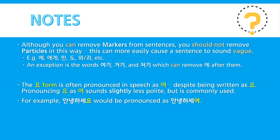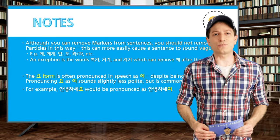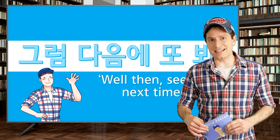Here are some notes about this lesson. Although you can remove markers from sentences, you should not remove particles such as 에, 에게, 만, 도, 와, 과, and many others, as this can more easily cause a sentence to sound vague. An exception is the words 여기, 거기, and 저기, which can have 에 removed after them. Also note that the 요 form is often pronounced in speech as 여 despite being written as 요 — pronouncing 요 as 여 sounds slightly less polite but is very commonly used. For example, 안녕하세요 could be pronounced as 안녕하세여. And that's all for this lesson. In the next lesson, we're going to start learning about formal speech and the 니다 ending. 그럼 다음에 또 봐.